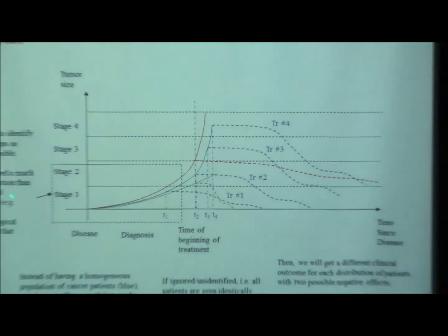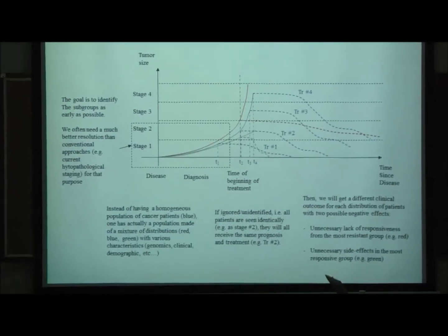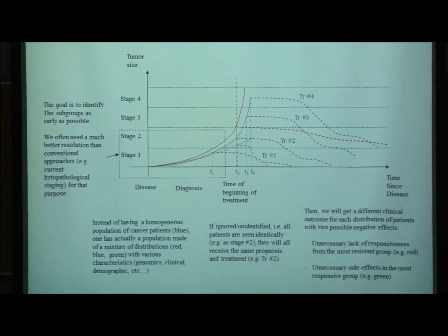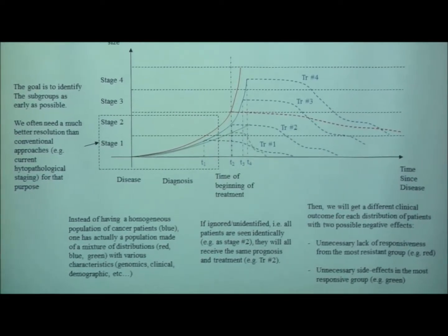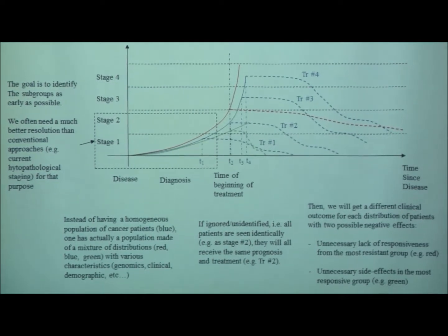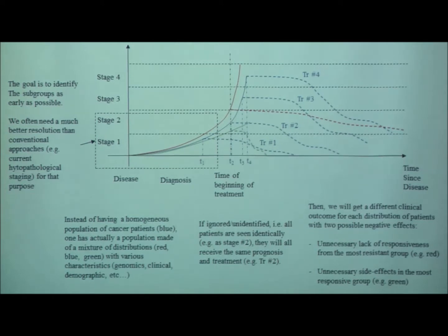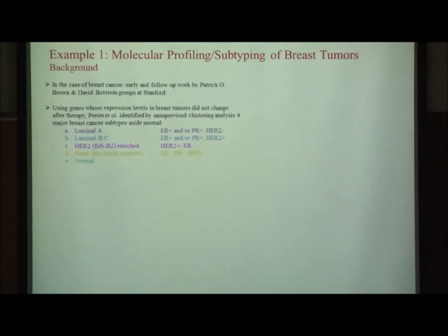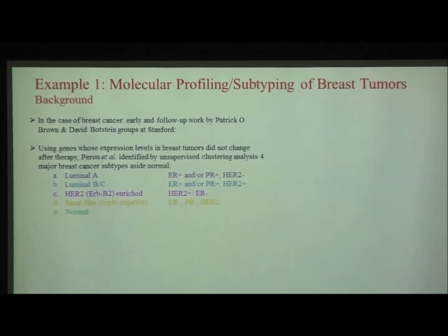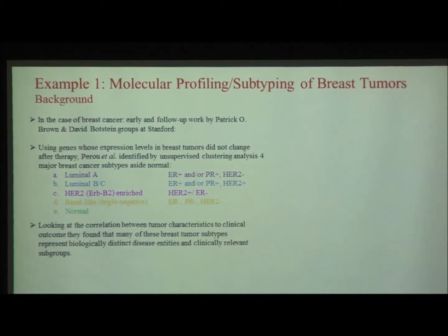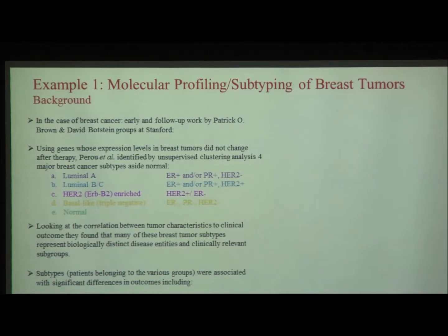Histopathology has had some success in prognostication, especially in the early 90s, and I'm not saying it's all wrong. But we can do better with the advent of new technologies and high-throughput assays — we can interrogate many more markers and genes to have better resolution. For example, in breast cancer, back in the early 2000s, the famous group at Stanford studied breast cancer and using microarray expression data, they could identify subtypes.